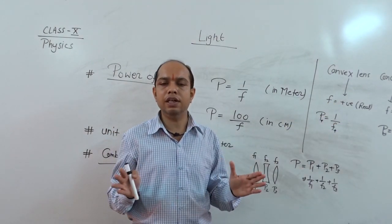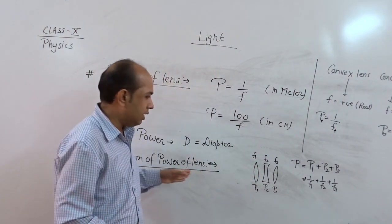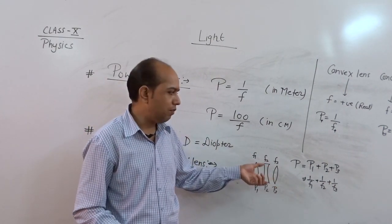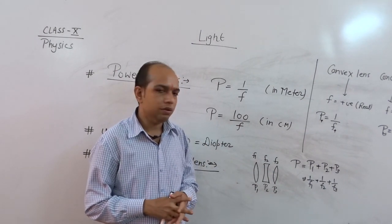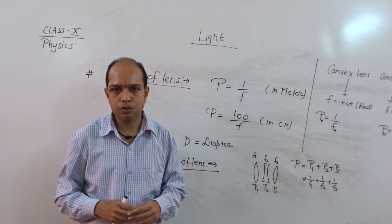And if we find the resultant when two or more than two lenses are there, we easily take the sum of individual power of different lenses. So this denotes here power. Thank you everyone.